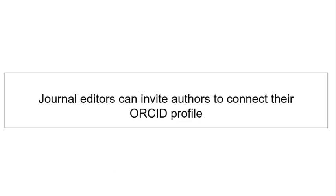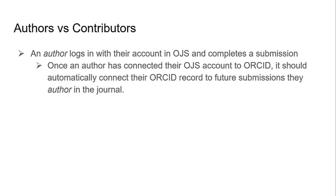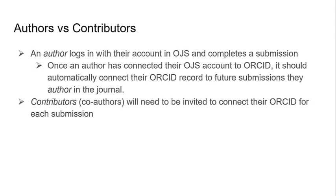Now that the journal has the plugin enabled, the journal editors can invite authors to connect their ORCID profile to their submission. There are a few options for authors to connect their ORCID profile in OJS. First, let's briefly look at the difference between authors and contributors. In OJS, an author is the person who logs in with their account and completes a submission. Once an author has connected their OJS account to ORCID, it should automatically connect their ORCID record to future submissions they author in the journal. Contributors in OJS are co-authors. Since they don't log in with their account to submit to OJS, they will need to be invited to connect their ORCID for each submission they make in the journal.